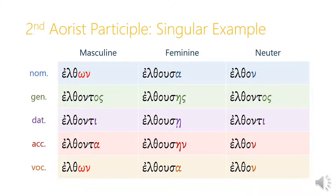The irregular masculine nominative singular ending is -ōn, which also shows up in the vocative. With the neuter, the irregular ending puts nu right after the connecting vowel — just like the first aorist put nu after the connecting vowel. But with the second aorist the connecting vowel is omicron, so the neuter nominative singular is elthon, and then we'll have elthontos, elthonti, and elthon again in the accusative and vocative.